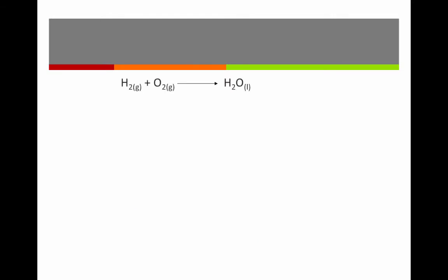Here's another example. Hydrogen plus oxygen yields water. I have two hydrogens on each side and I have two oxygens on my reactants and one in the products. Therefore, I need to fix my oxygens.